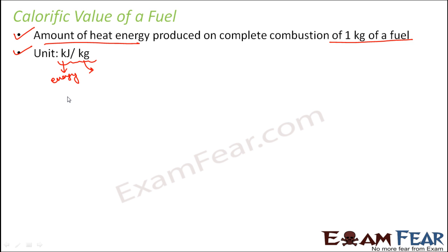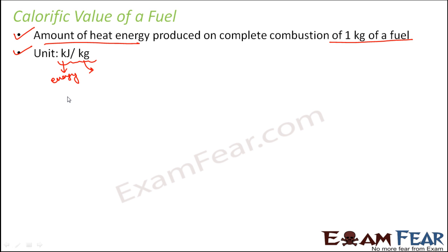Let us look at the calorific values of various fuels. For example, when you talk about coal, its calorific value is somewhere around 25,000 to 33,000 kilojoules per kg. That means 1 kg of coal, if completely burned, will produce 25,000 to 33,000 kilojoules of heat energy.